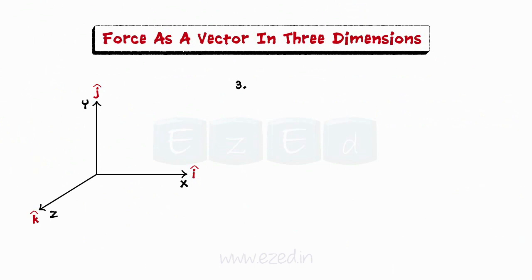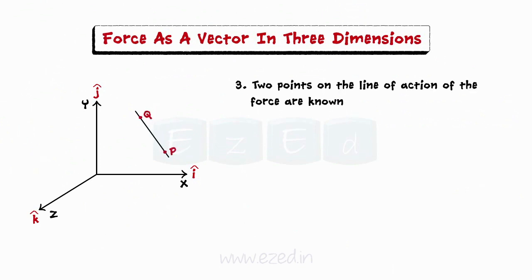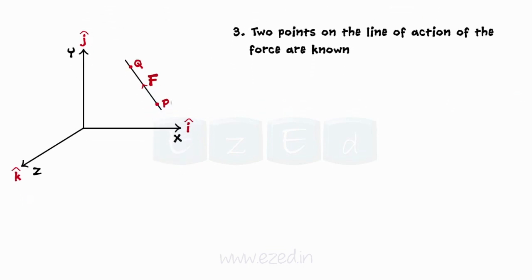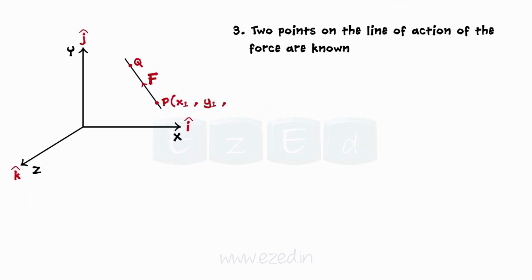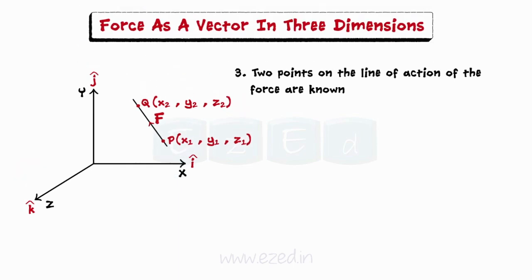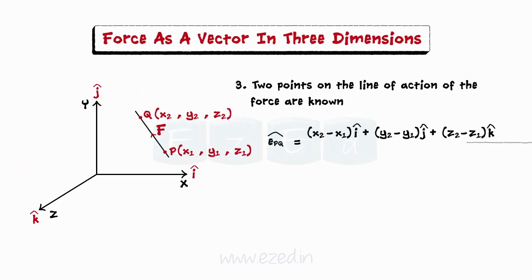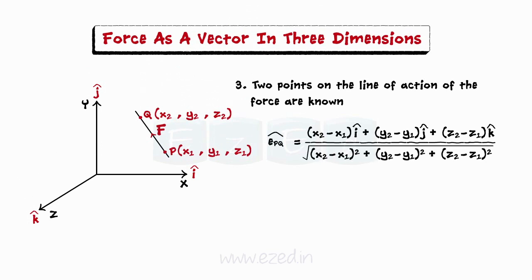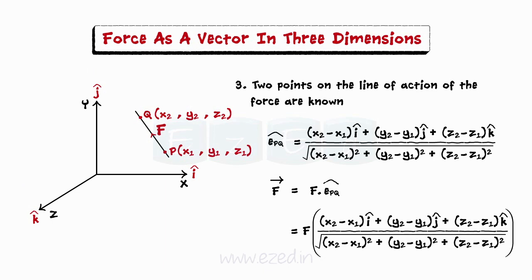In the third type, two points on the line of action of the force are known. Consider a force of magnitude F directed from point P (x1, y1, z1) to point Q (x2, y2, z2). The unit vector from P to Q is E_PQ-hat and can be represented accordingly. Hence, the force can be represented as F-bar equals F into E_PQ-hat — that is, the magnitude of the force multiplied by the unit vector along its line of action.